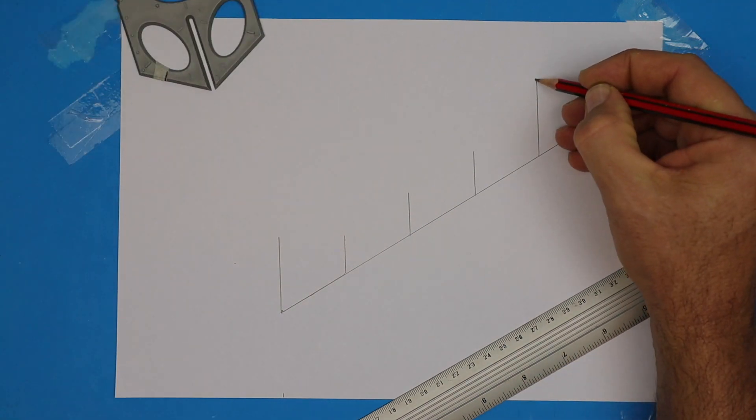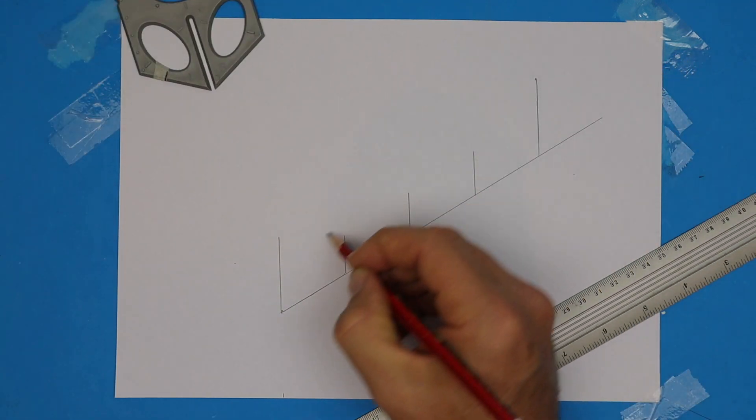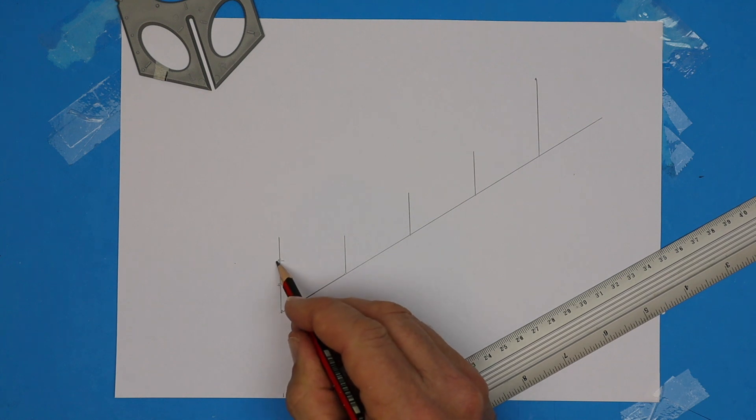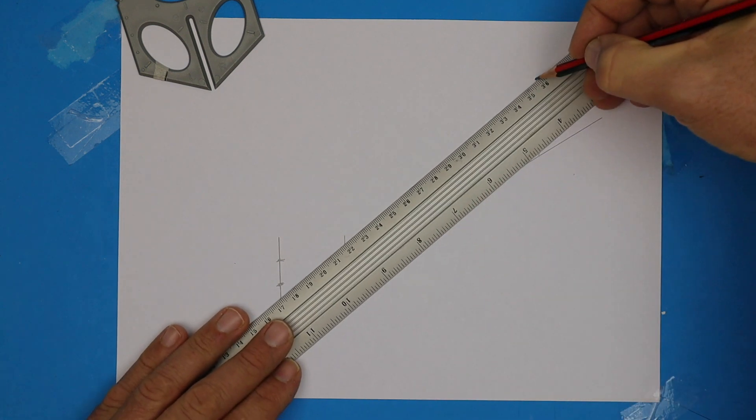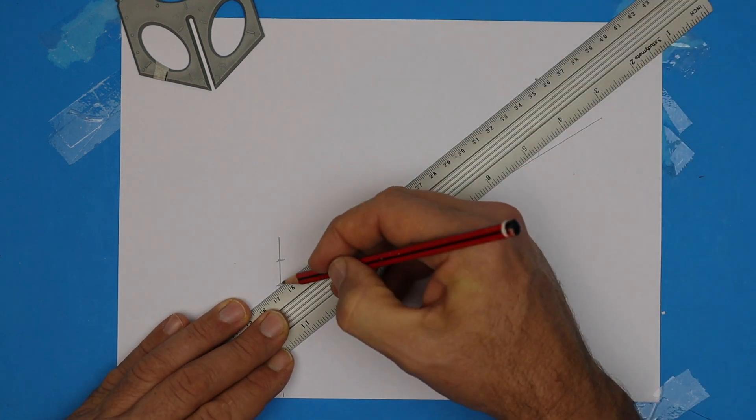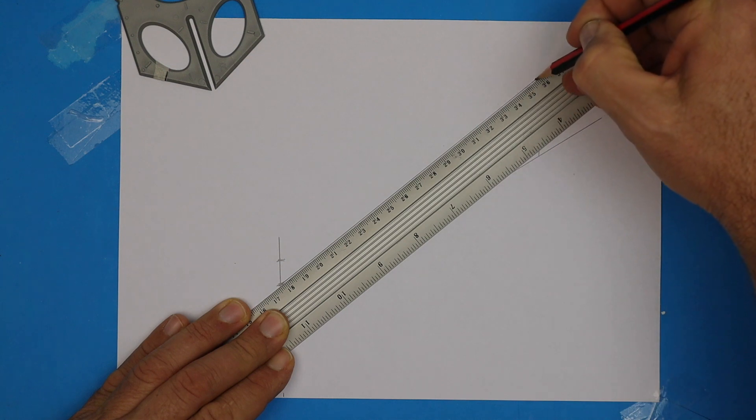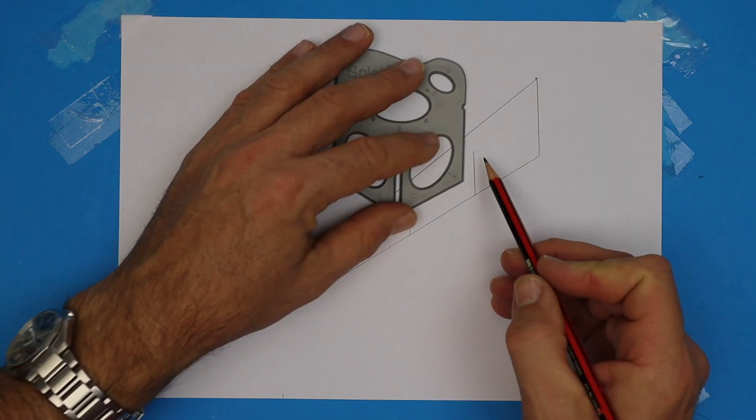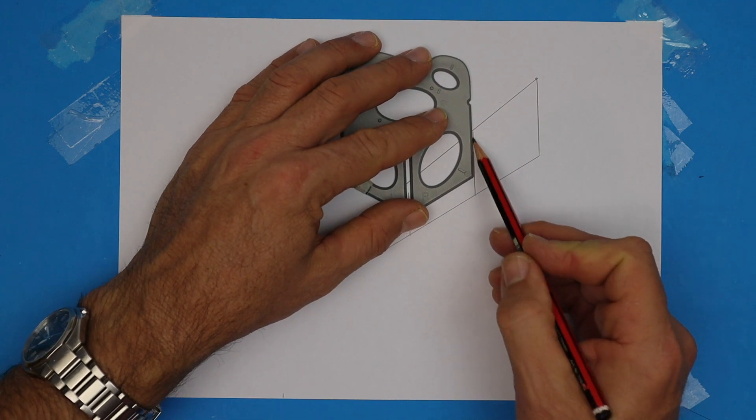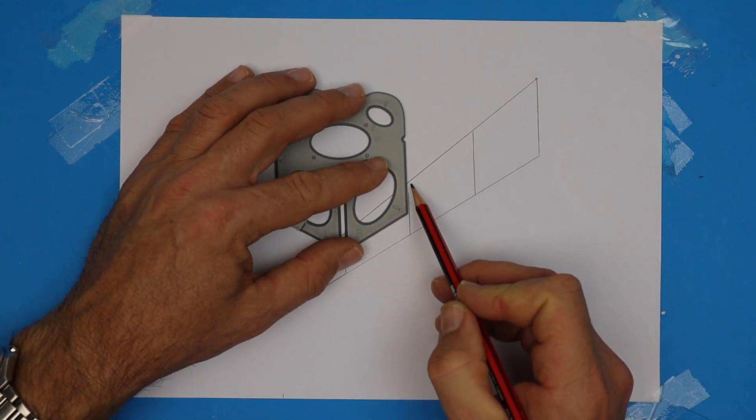Do you remember how far we came up on the front line? It was a third. So we're going to mark a line now from that point to that point. Let's use the long ruler. Now we'll tidy up by trimming some of those lines. I'm extending those division lines just so they meet neatly at the top.